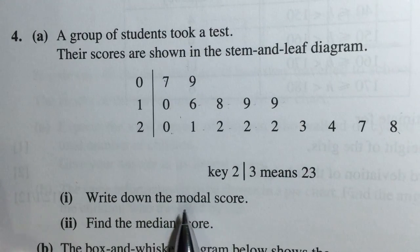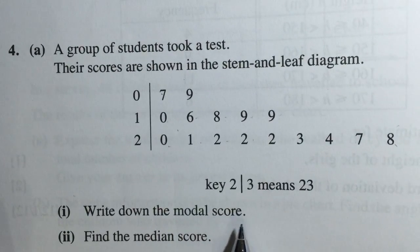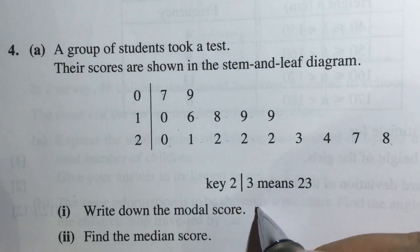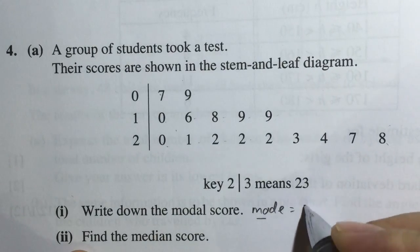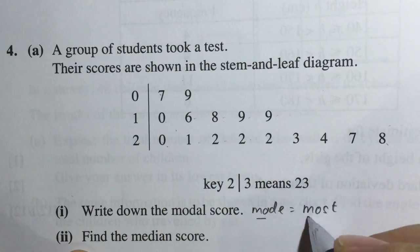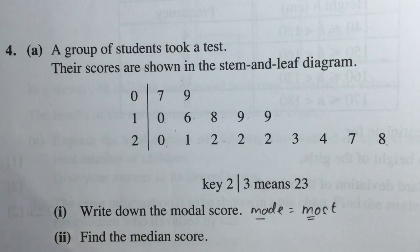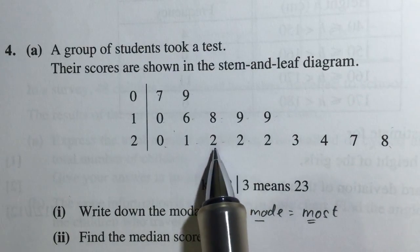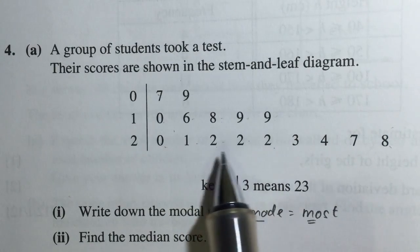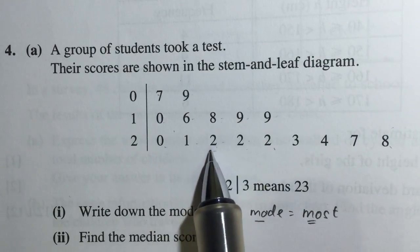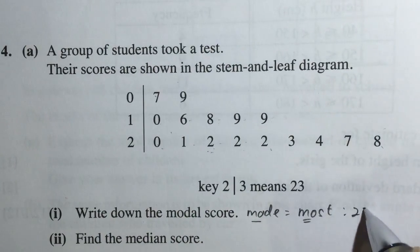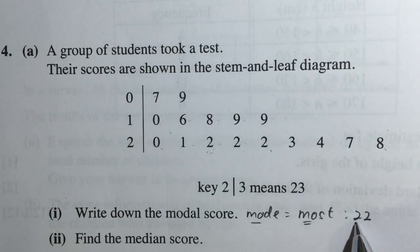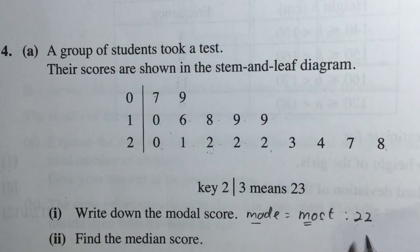Now the first question says you're supposed to write down the modal score. Modal comes from the word mode, and the word mode is actually the same as saying the most. So in this case you will see that the number 2 here appears the most often. So we say that 22 is the most. You must remember it's tens and units.